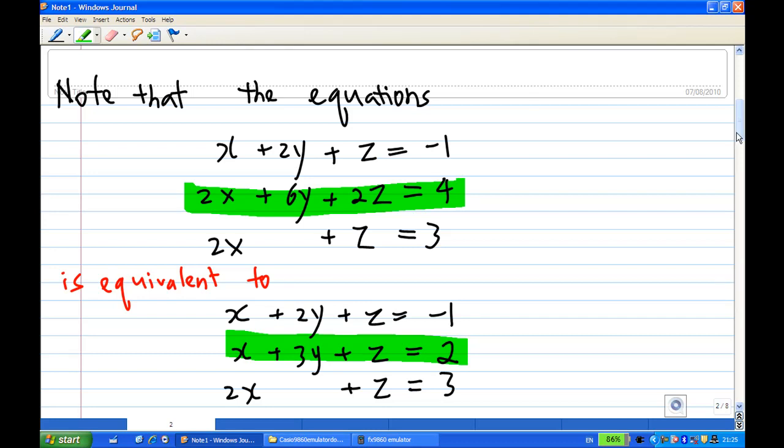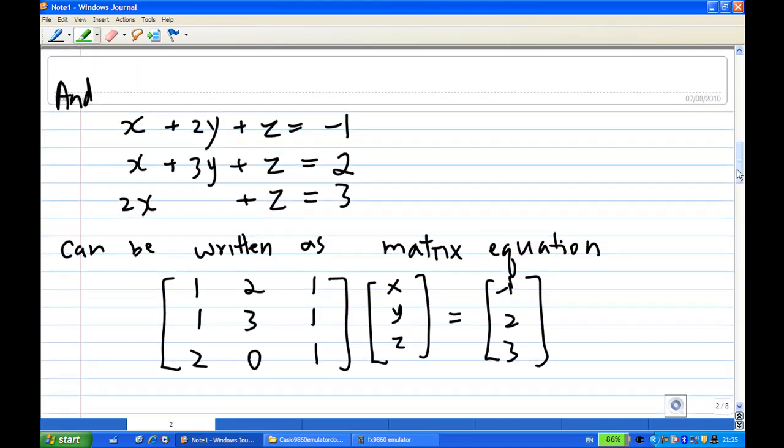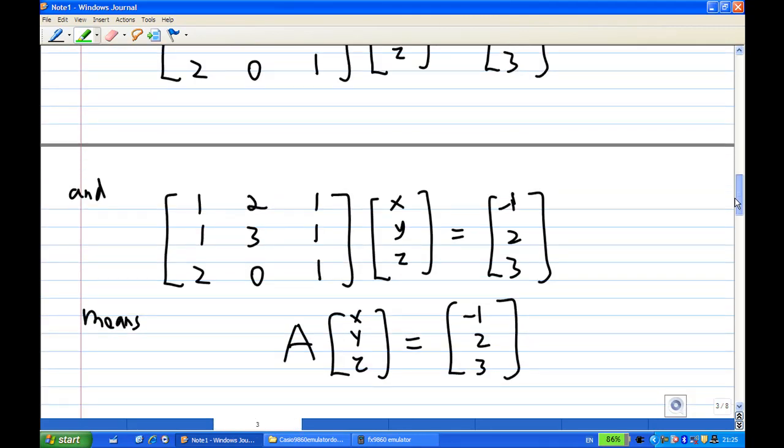Therefore, this system equation can be rewritten into matrix form where [1,2,1; 1,3,1; 2,0,1] as a matrix multiplied by [x; y; z] will be equal to [-1; 2; 3]. Now, this matrix is actually the given matrix A.